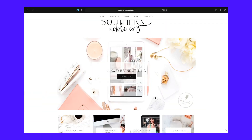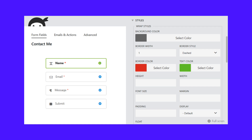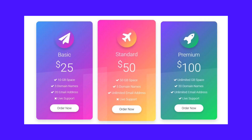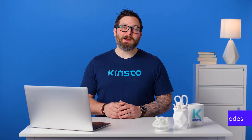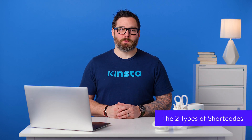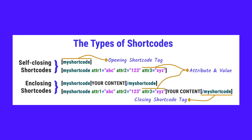For example, you can use shortcodes to embed sliders, forms, or pricing tables. You can even use them to create reusable page design templates. There are primarily two types of shortcodes in WordPress: self-closing shortcodes, which don't need a closing tag, and enclosing shortcodes, which need a closing tag. Enclosing shortcodes generally manipulate the content between the opening and closing tags.